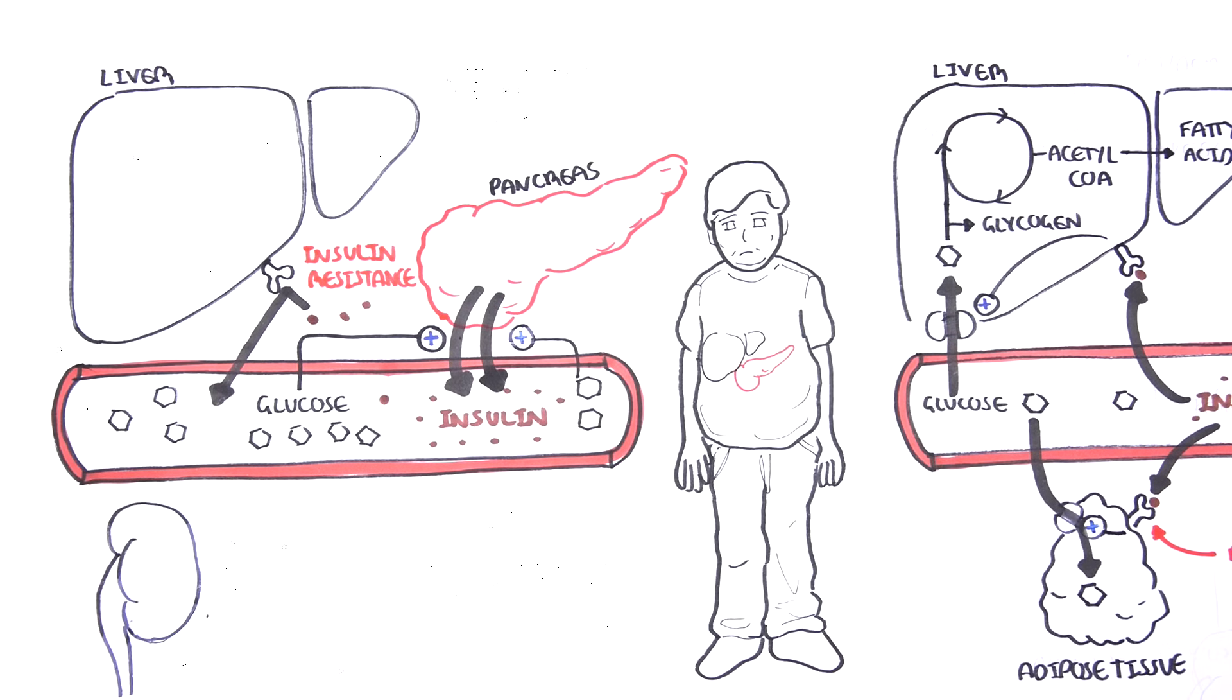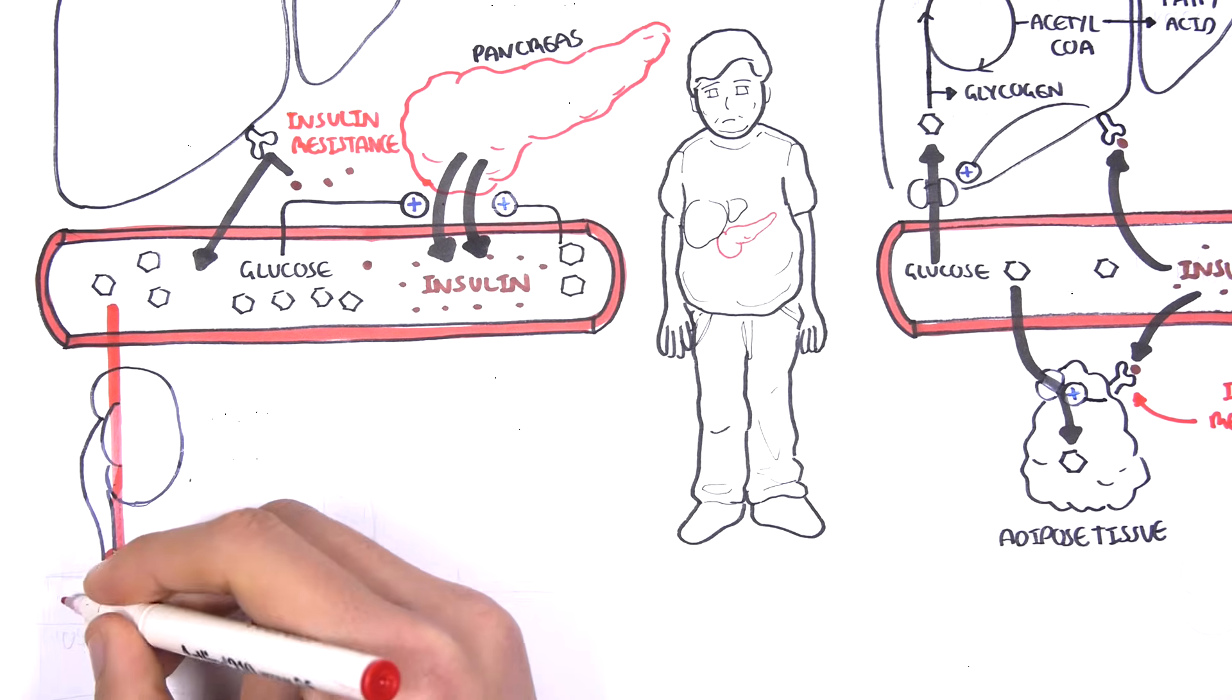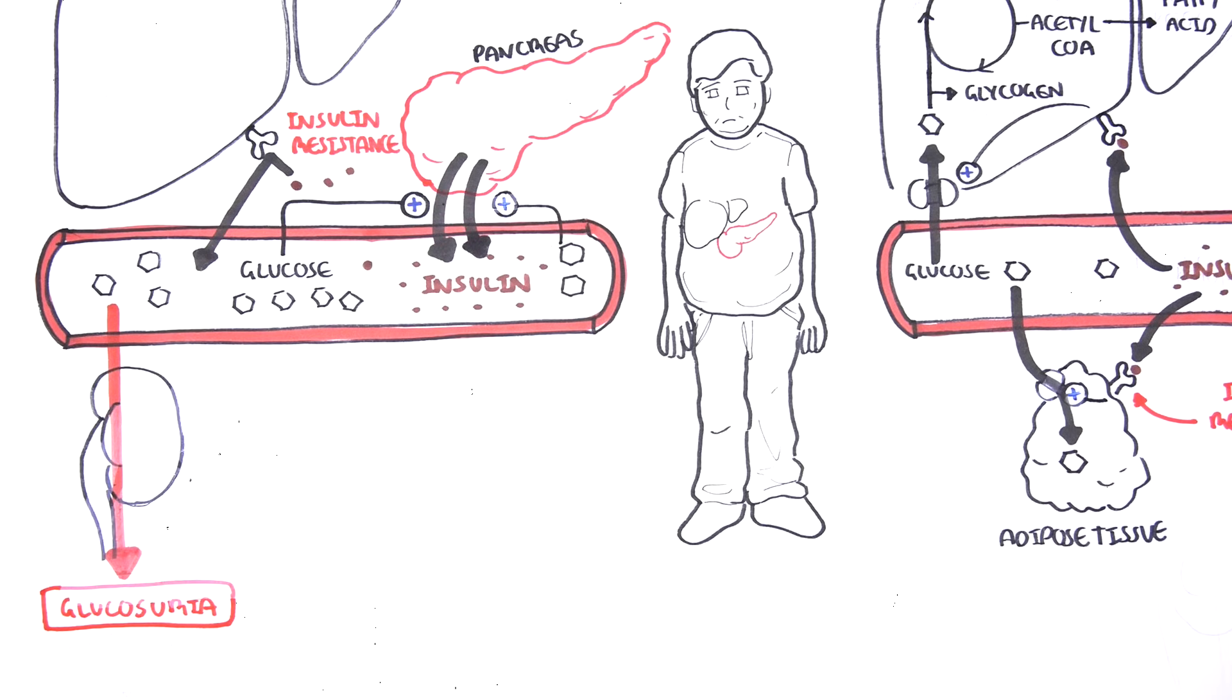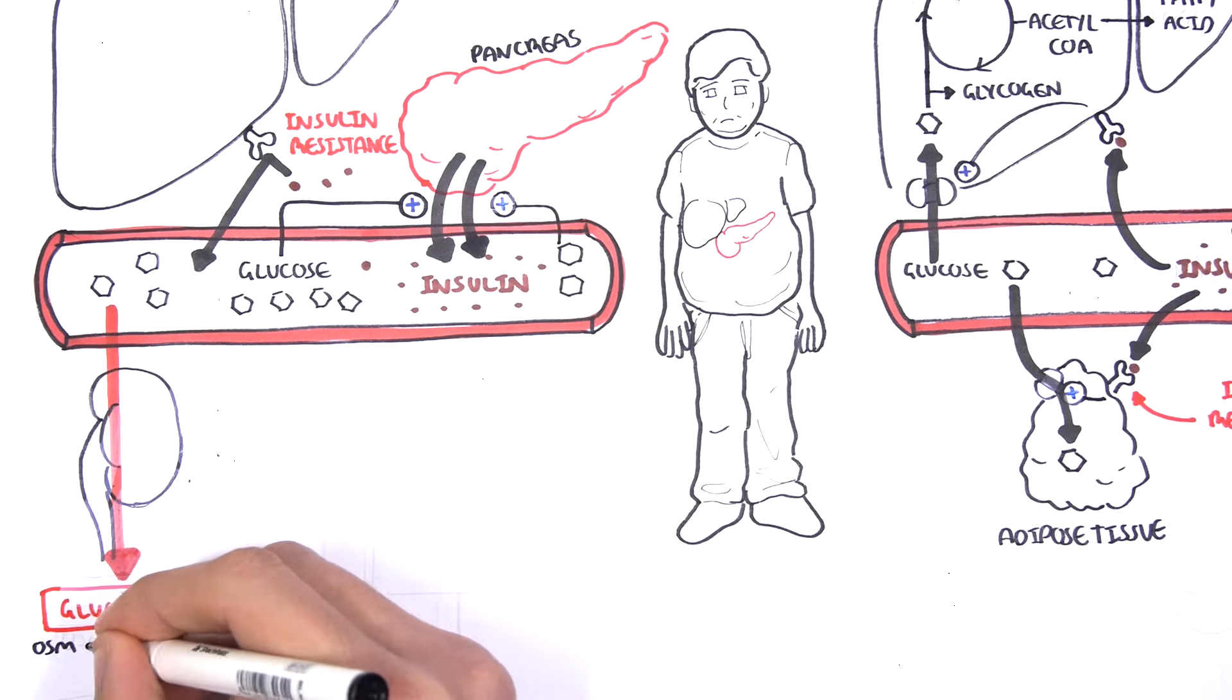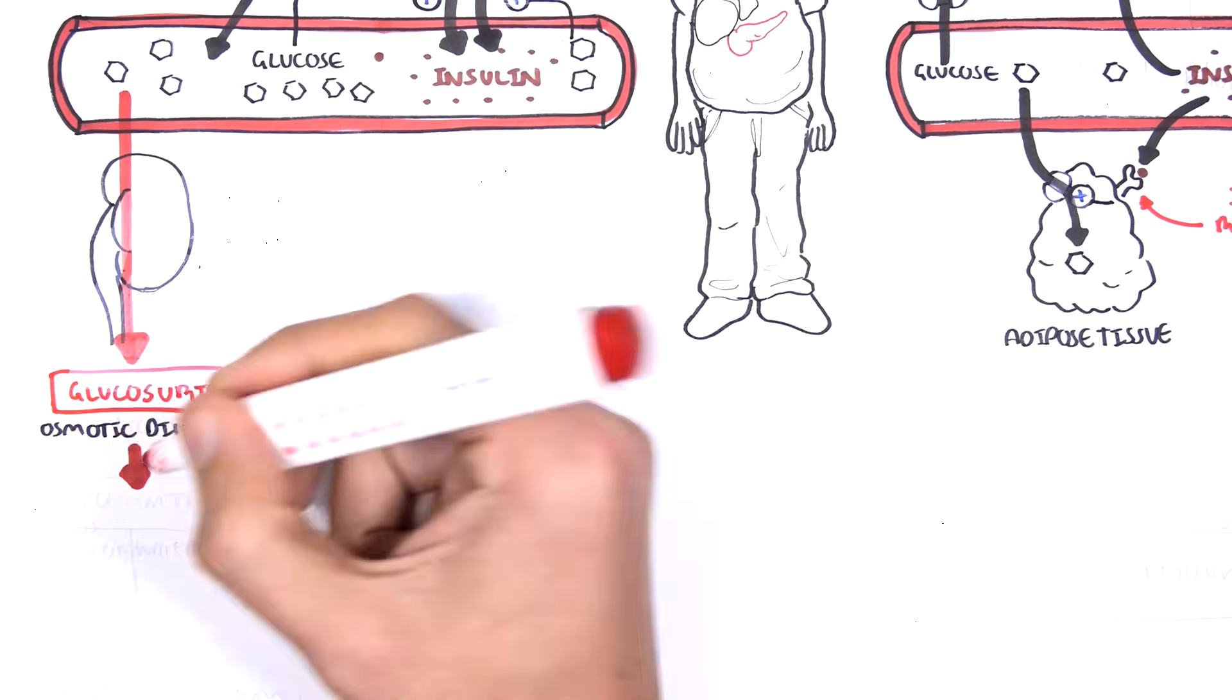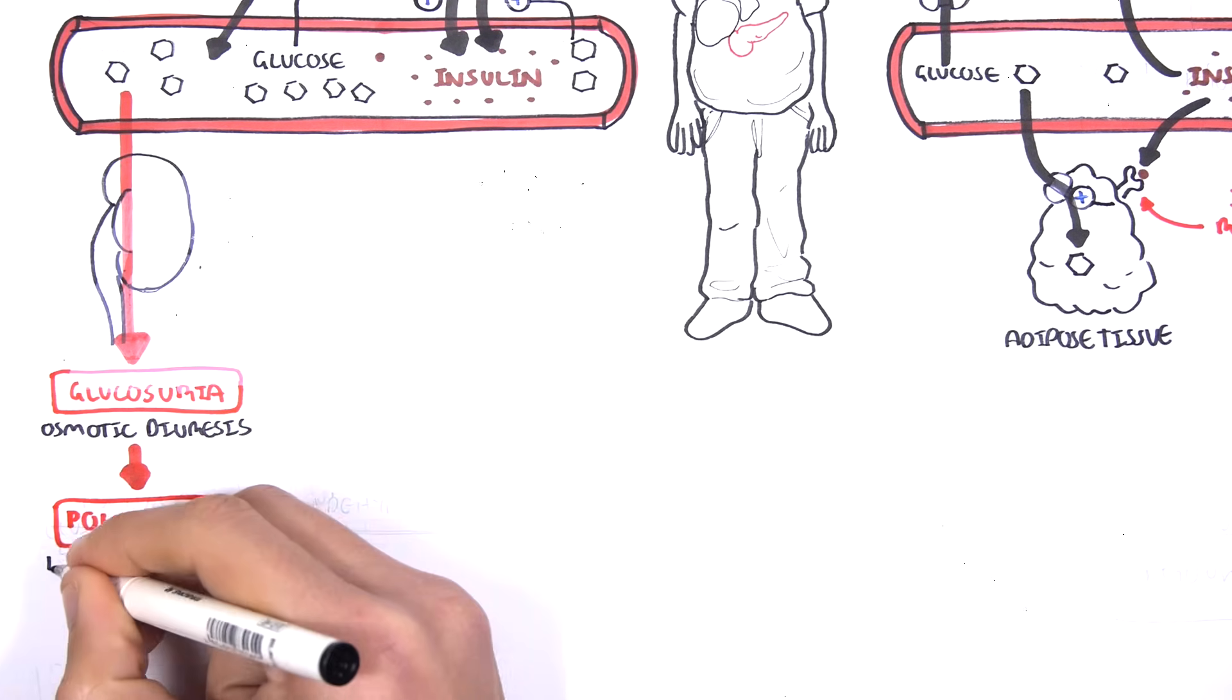With persistent high blood glucose, the glucose will travel to the kidneys and be secreted out. This is called glucosuria. Glucosuria will result in osmotic diuresis. What does that mean? Well glucose will essentially drag water with it because it is a solute. And so the person will start peeing more, polyuria.